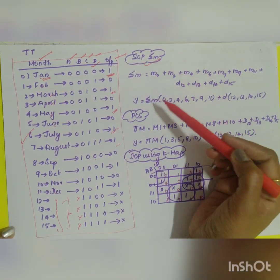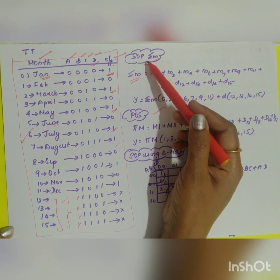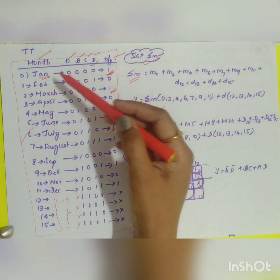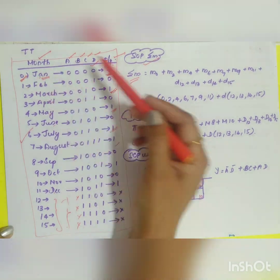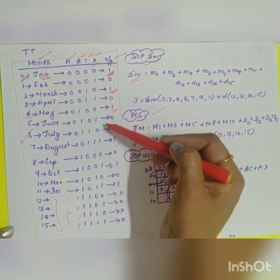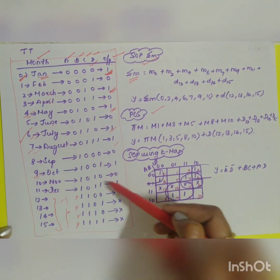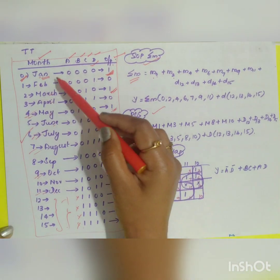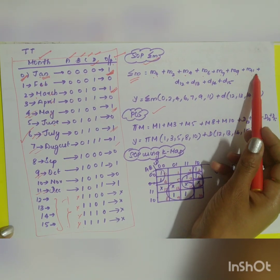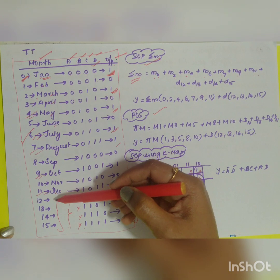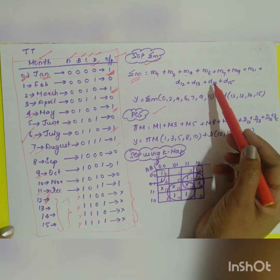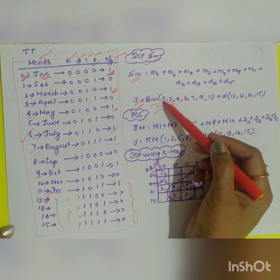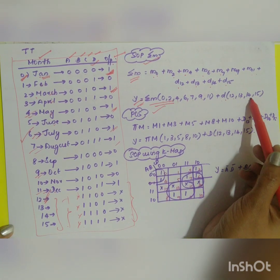Along with the truth table you have SOP and POS. What will be your SOP? Sum of product term is equal to the sum wherever you have the output value equal to 1. What are the output values you have equal to 1? 0, 2, 4, 6, 7, 9, and 11. So, M0, M2 sum of min terms: M0, M2, M4, M6, M7, M9, M11 plus you have your don't care condition. Don't care 12, 13, 14, 15 is your don't care: D12, D13, D14, D15. So, y will be equal to sum of product terms, sum of min terms of 0, 2, 4, 6, 7, 9, 11 plus don't care of 12, 13, 14, 15.